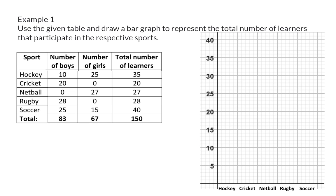Example 1: Use the given table and draw a bar graph to represent the total number of learners that participate in the respective sports. The table gives us the number of boys, number of girls, and the total number of learners that participate in five different sports. The question says we need to focus on the total number of learners.